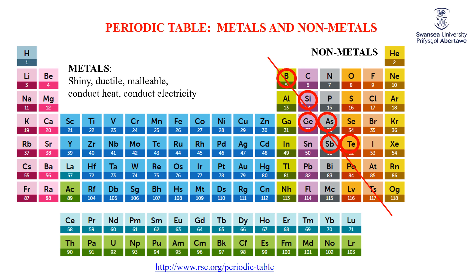The elements on this dividing line — boron, silicon, germanium, arsenic, antimony, and tellurium — are known collectively as the metalloids. They're in between in properties. Some people call these semi-metals.